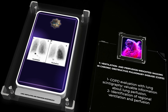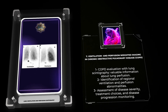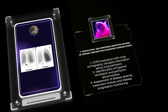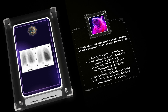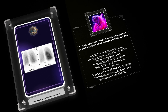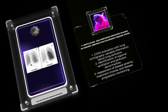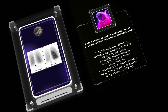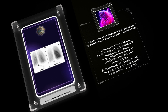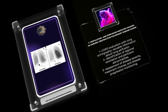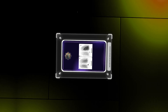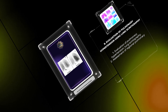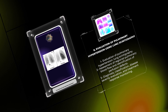Chronic obstructive pulmonary disease presents a significant burden on patients and the healthcare system. Lung scintigraphy provides valuable information about lung perfusion and offers ventilation and perfusion weighted imaging for the evaluation of COPD. This technique enables the identification of regional ventilation and perfusion abnormalities, aiding in the assessment of disease severity, guiding treatment choices, and monitoring disease progression. By precisely quantifying these abnormalities, scintigraphy helps tailor personalized interventions for COPD patients.